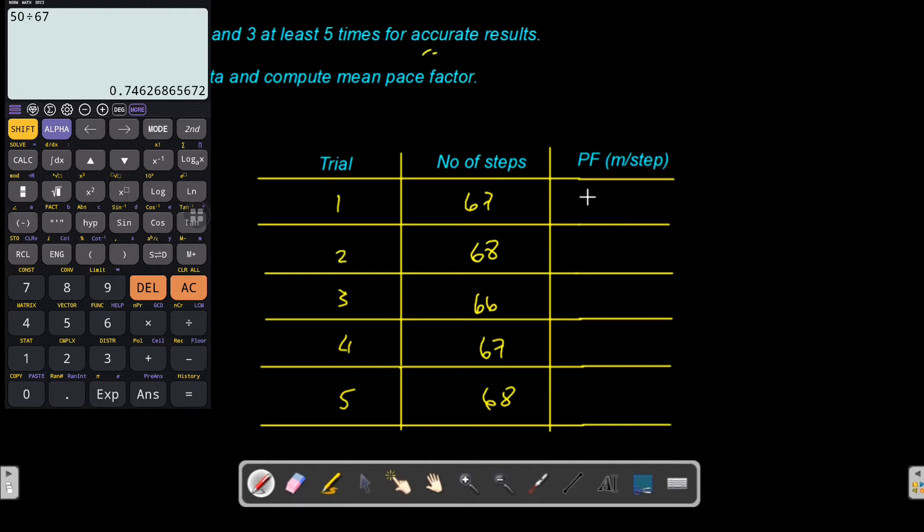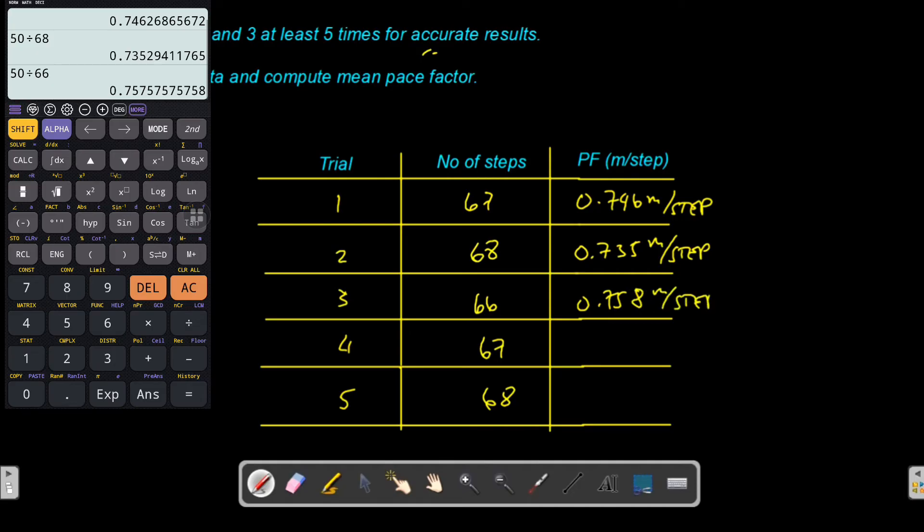For trial 2, you have 50 divided by 68, that's 0.735 meters per step. Then 50 divided by 66, that's 0.758 meters per step. For trial 4, that's 67, which is 0.746 meters per step. And trial 5 is 68, that's 0.735 meters per step.